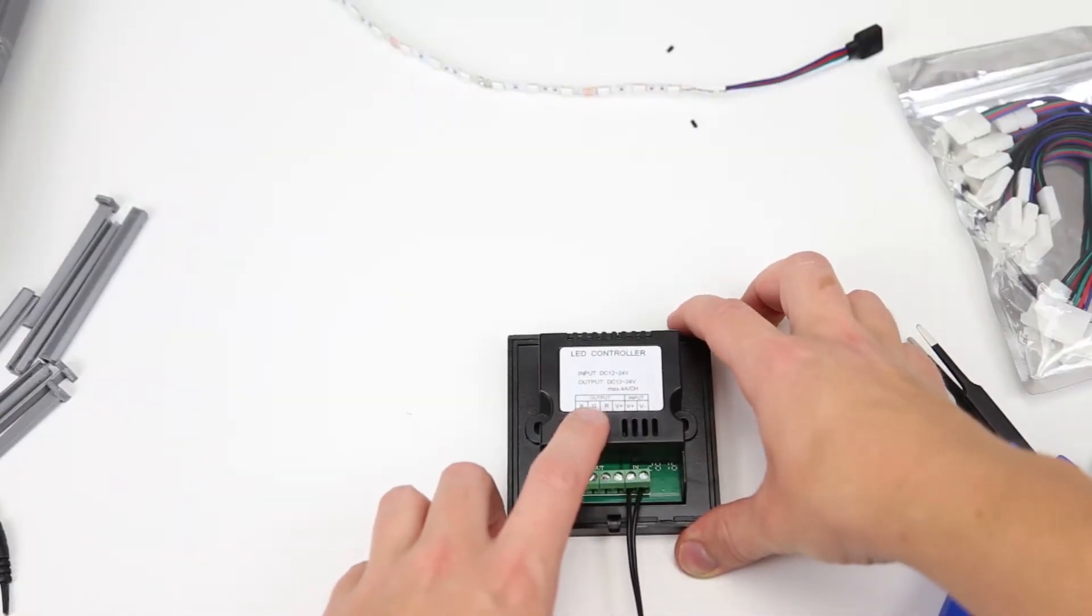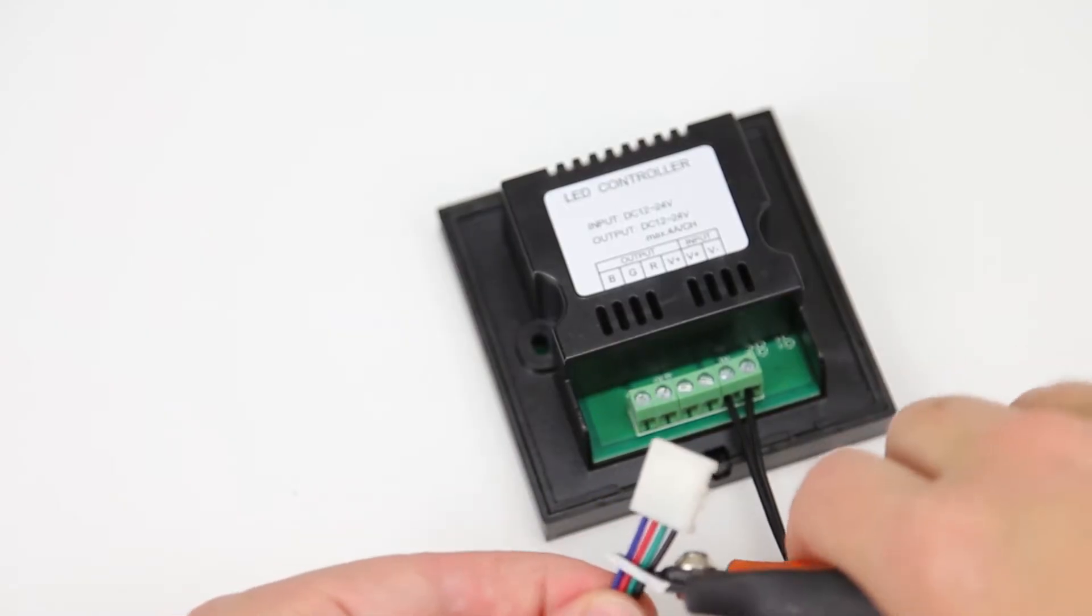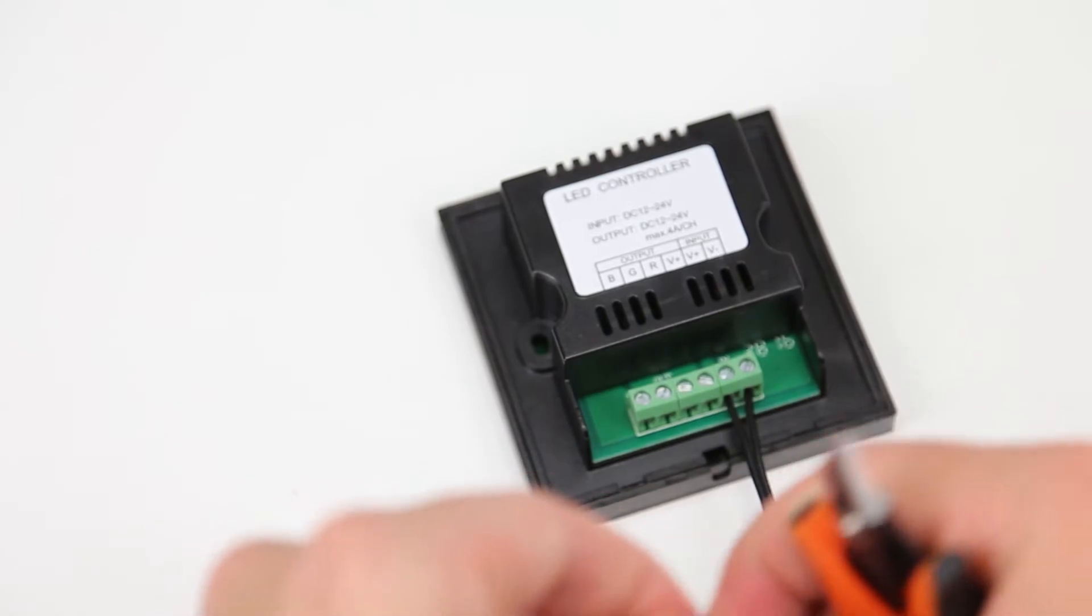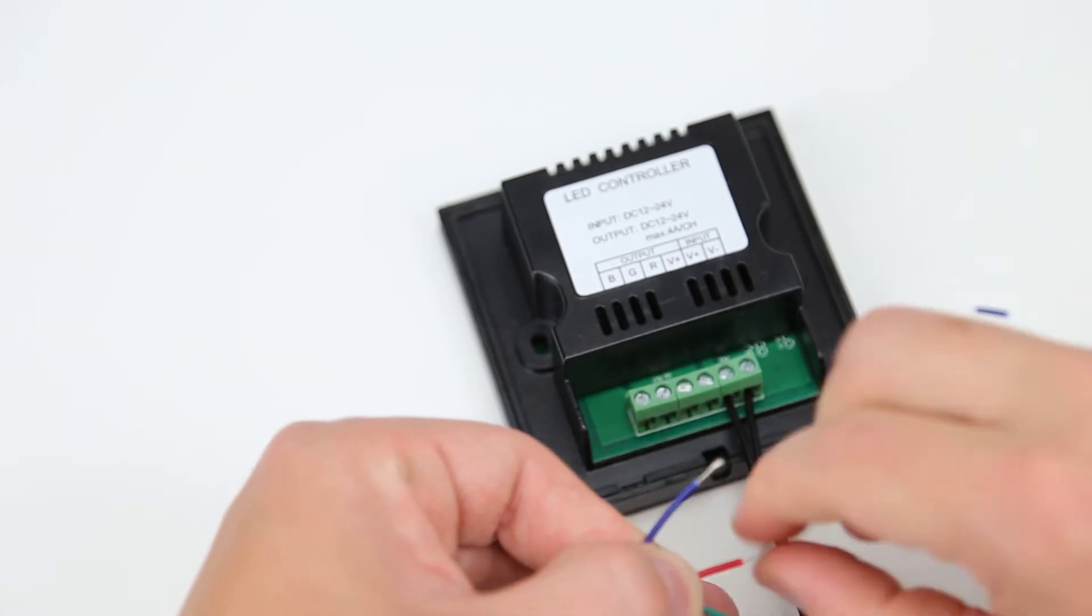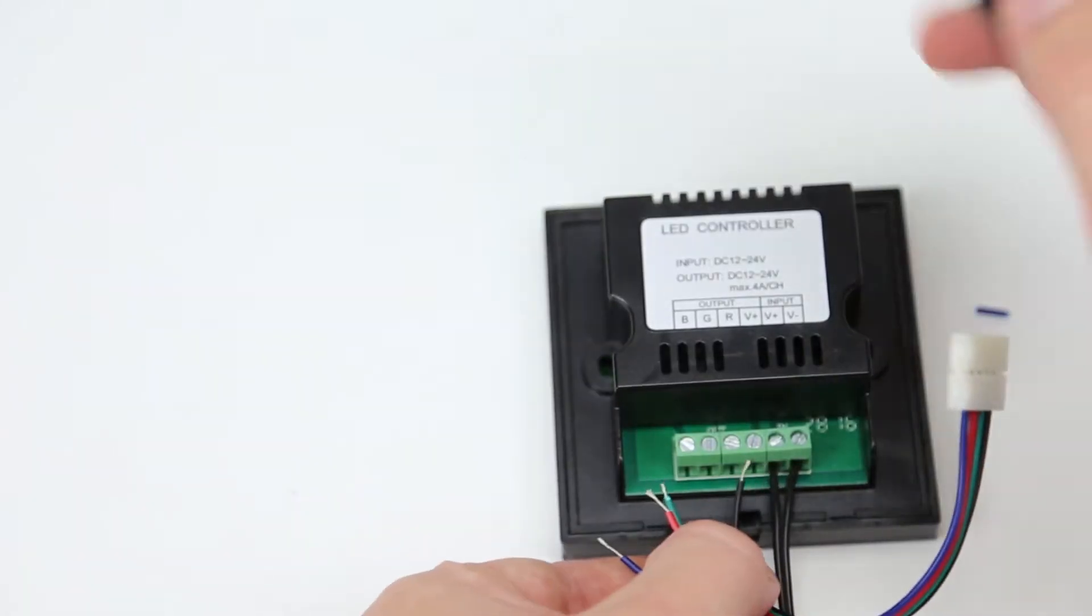And then since we want to test everything out and test the controller, you'll see that we have everything in order. I'm just going to cut one of the connectors off here. We can then strip all these wires. And put them in the respective blue, green, red and voltage plus on the LED strips.